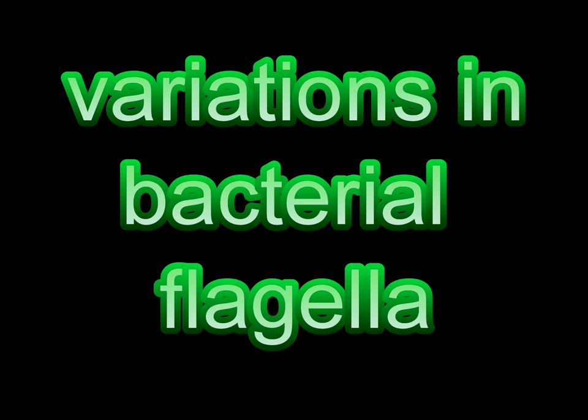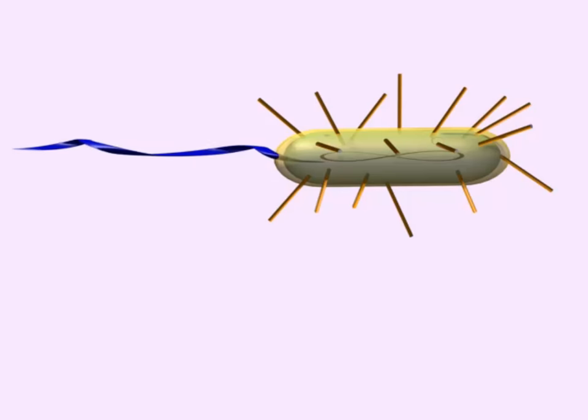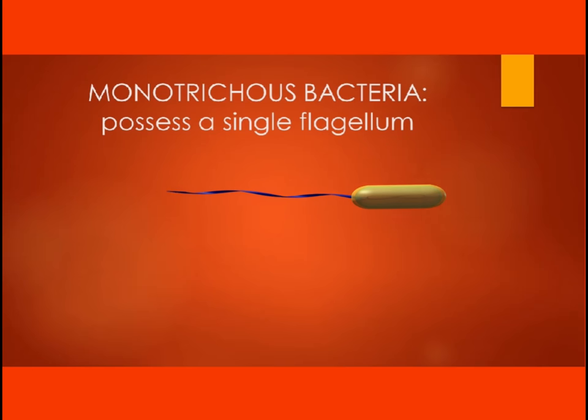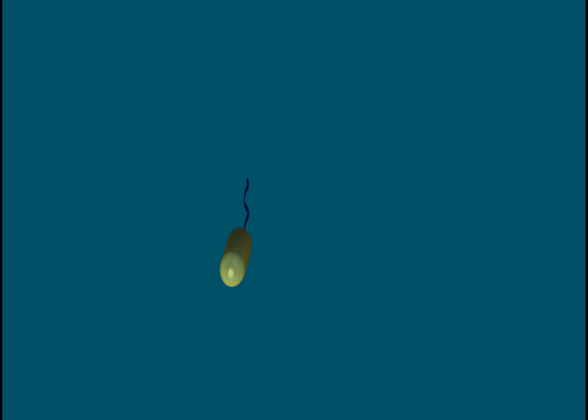Bacterial flagella can vary in number and position. The majority of motile bacteria are classified as monotrichous bacteria because they possess one single flagellum. This flagellum can rotate in different directions, allowing forward and reverse runs, and also a flicking which allows them to reorient themselves at random.